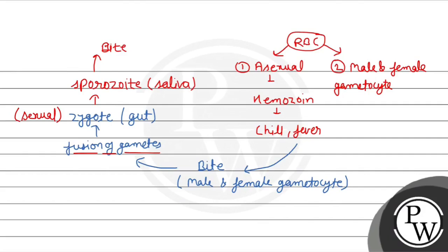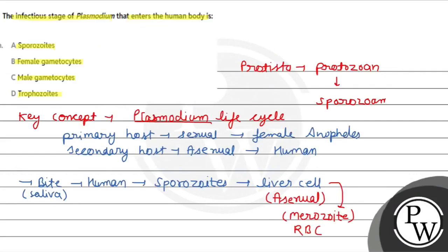The zygote develops into the sporozoite form, which moves to the salivary glands of the mosquito. When this mosquito bites a human, the sporozoite form enters the human body. So what enters the human body is the sporozoite form.